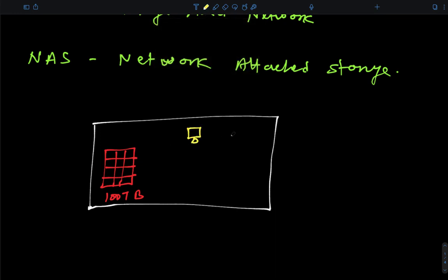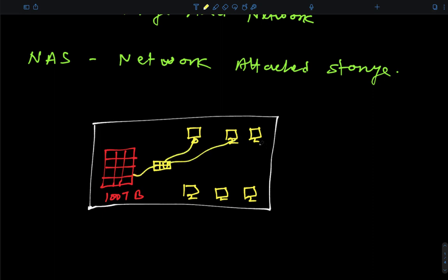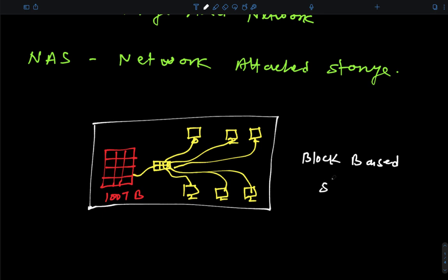Multiple resources are available in the environment — ESXi servers, Hyper-V servers, VPN servers, and database servers. When you want to share space from your SAN storage to existing servers over a local area network, SAN storage is considered block-based storage. In block-based storage, we share space in the format of a disk, meaning each system gets a separate partition — each machine accesses space in the format of a block.